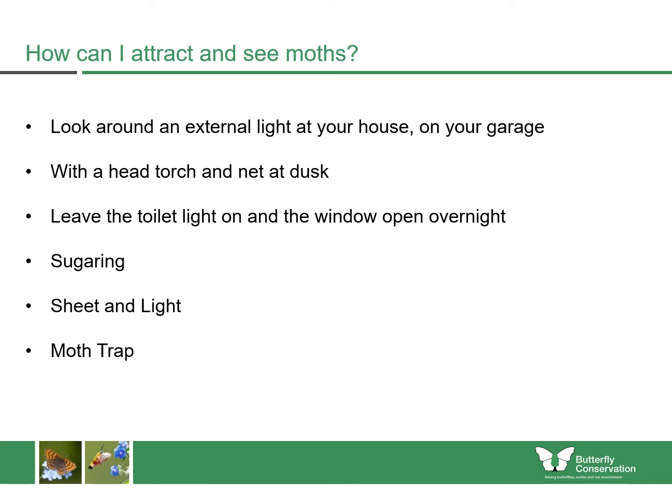How can I attract and see moths? Without buying any equipment at all, once it's dark or going dark, have a look around a bright light outside — maybe in your porch or outside your garage — and you will often find moths flying about. Going out at dusk with a head torch and net can be very productive, especially if you look around good nectar sources such as buddleia, verbena, nicotiana, and later in the year ivy flowers. Just leaving a light on in your toilet or bathroom overnight with a window open can attract a few moths — just be sure to let them out again in the morning once you have had a look and identified them. Sugaring is a method of attracting moths to something sweet that emulates nectar and can be quite successful, particularly later in the year when nectar sources are becoming harder to find.